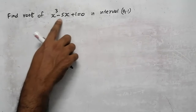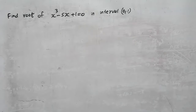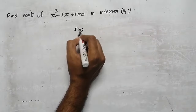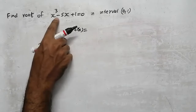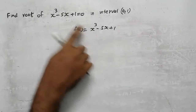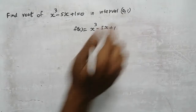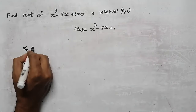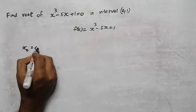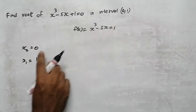We need to find the root of x cubed minus 5x plus 1 equal to 0 in the interval [0, 1] using the secant method. First, write f(x) — f(x) is the same as the question. Now we have the interval 0 and 1, so our first points are x₀ equal to 0 and x₁ equal to 1.